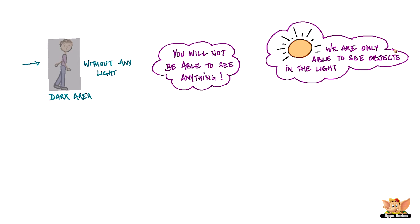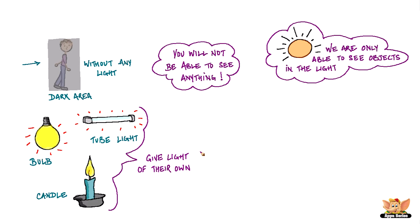Some objects like the bulb, tube light and candle give out light of their own. The sun is another familiar object that gives its own light.